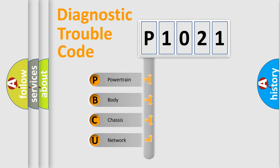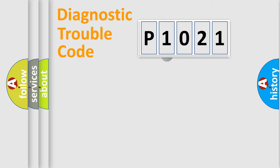We divide the electric system of automobile into the four basic units: powertrain, body, chassis, network. This distribution is defined in the first character code.